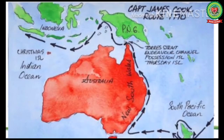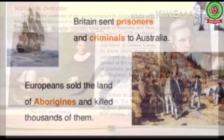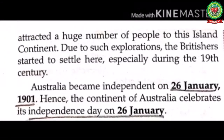James Cook landed at the eastern coast of Australia and claimed it for England. He named it New South Wales. Before its independence, Australia was ruled by the British. The British used the continent as a prison for their prisoners, to reduce the crowd in their prisons.